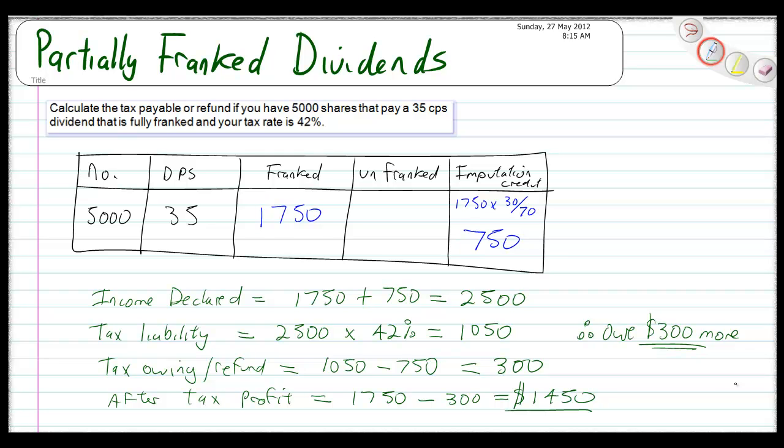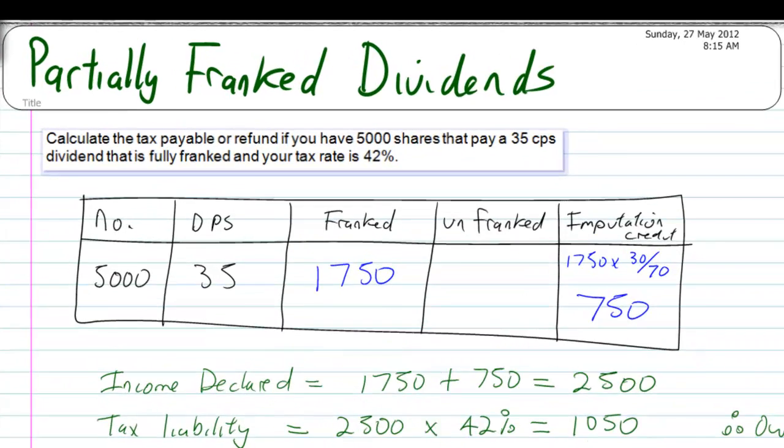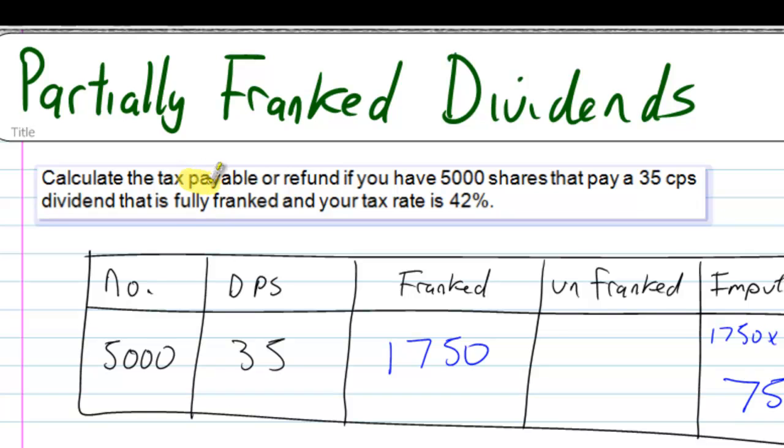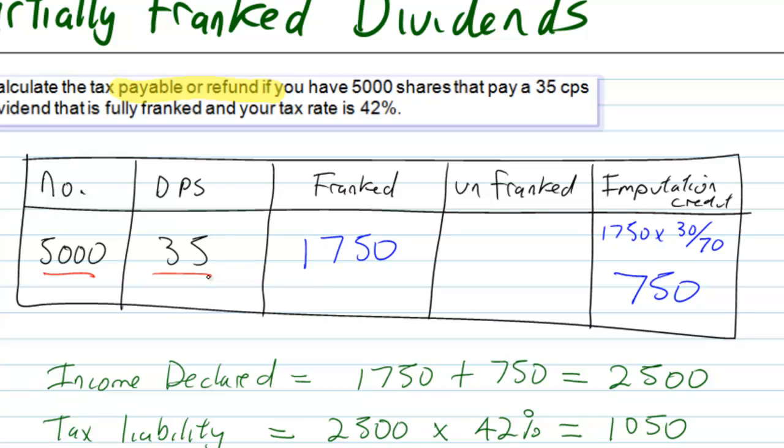So the question could read something along the lines of calculate the tax payable or refund if you have 5,000 shares that pay 35 cents per share, and your tax rate is 42%. So I always like using one of these tables. So 5,000, 35 cents per share, you times the two of them together, that one times that one, we'll give you $1,750.